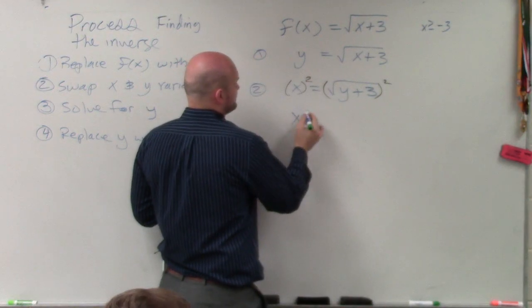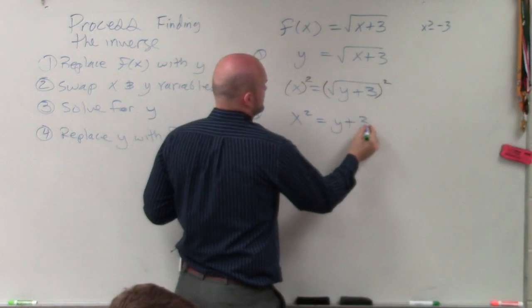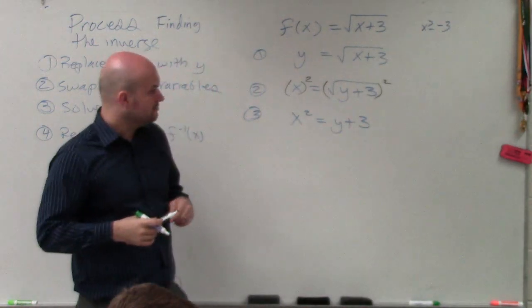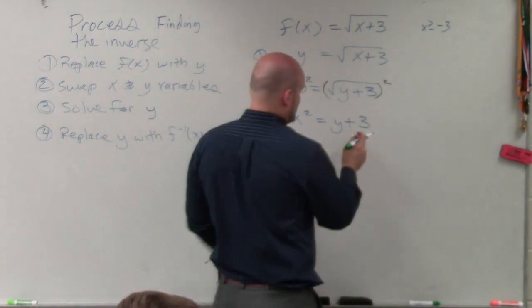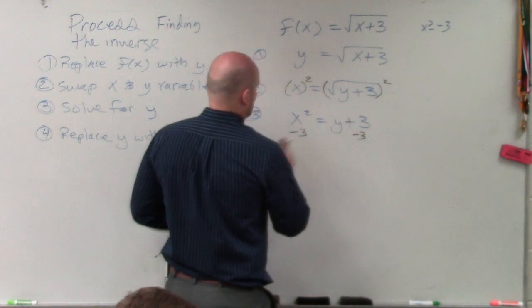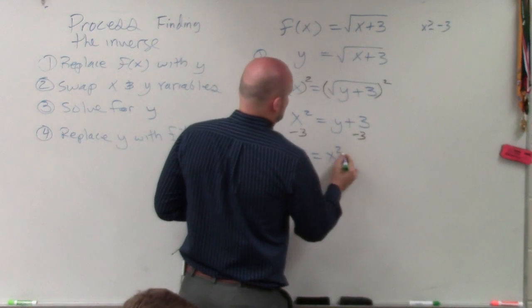So therefore, you're left with x squared equals y plus 3. Now, how do you solve for y? What do you got to do now? Undo, subtract 3. So your final answer is y equals x squared minus 3.